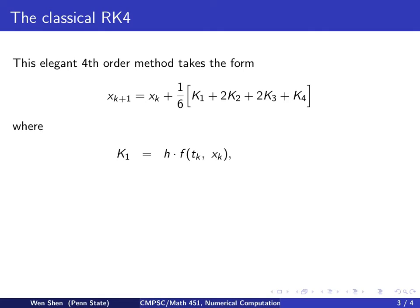Here k1 is computed as h times f, evaluated at tk, xk. And k2 is computed as h times f at tk plus half h, and xk plus half k1. And k3 is computed at tk plus half h, and xk plus half k2.